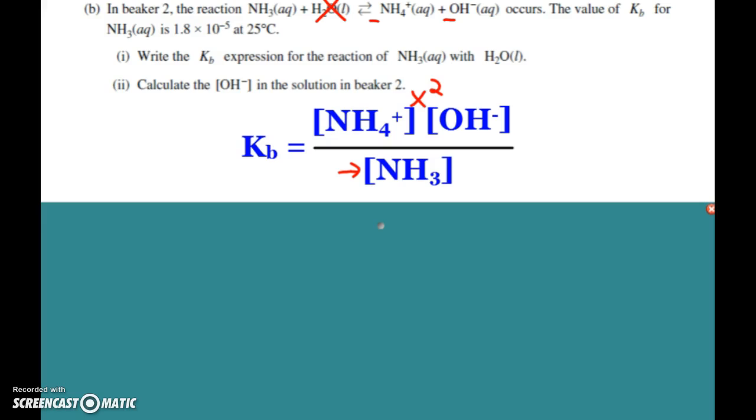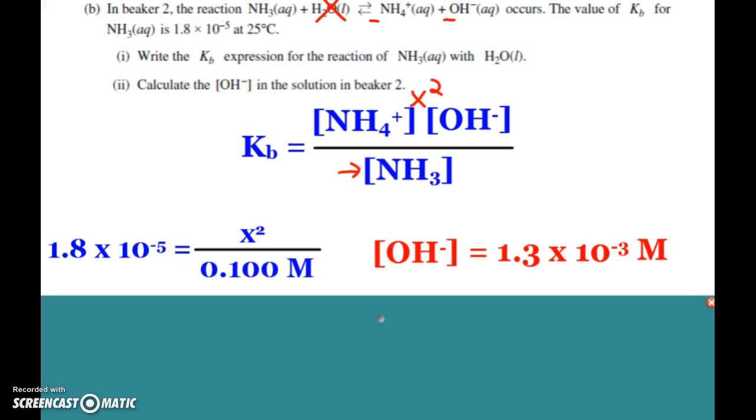This next question, calculate the hydroxide concentration. You simply have to say Kb equals x squared over the concentration. So 1.8 × 10^-5 multiply by 0.1, take the square root, and there you see the hydroxide concentration is 1.3 × 10^-3 M.